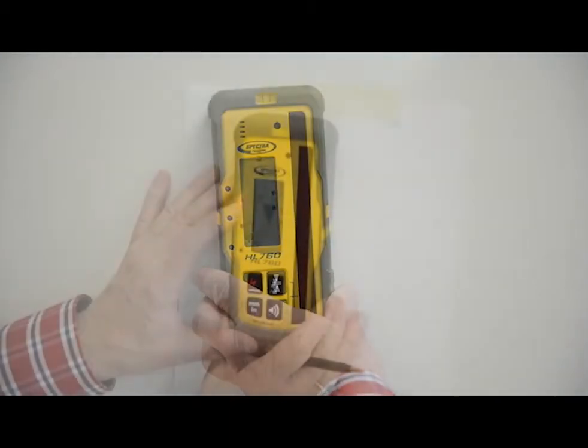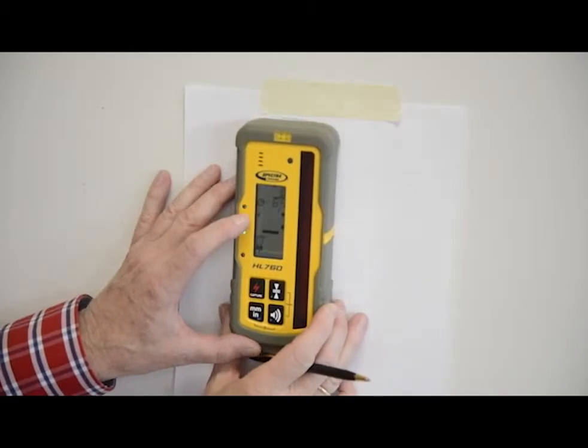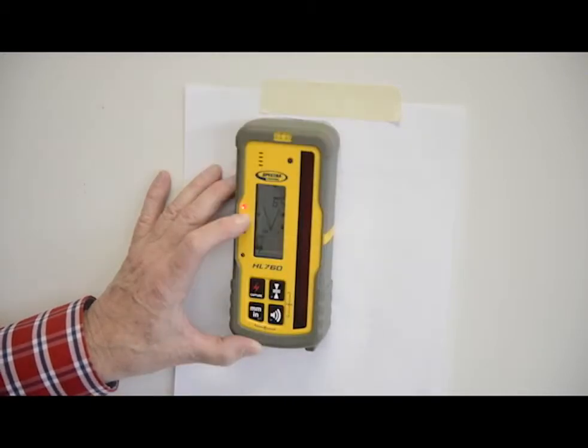Gradually raise or lower the receiver until you get an on-grade reading for the plus Y axis. Using the flat surface on the top of the receiver, make a mark on the wall.